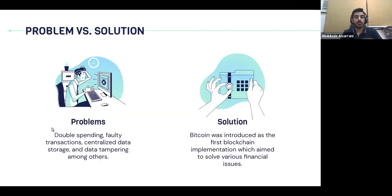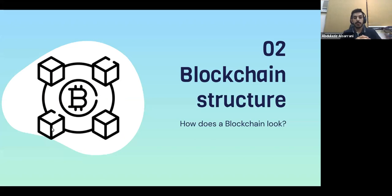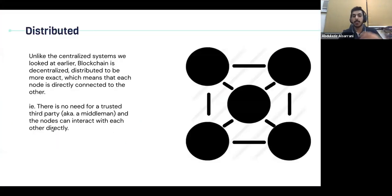So we have all these different problems: double spending, faulty transactions, centralized data storage, data tampering, and many others. As a solution, blockchain was introduced — and more specifically it was Bitcoin. We can think of Bitcoin as the first real implementation of blockchain technology, where it all started. Bitcoin aimed to solve the financial aspects of all the issues I mentioned. Although we talk about Bitcoin all the time when we think about blockchain, I want to look at the structure of a blockchain from a more zoomed-out, generalized view, separate from Bitcoin specifically.